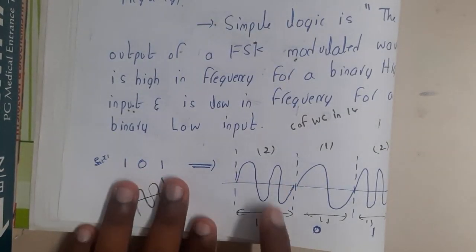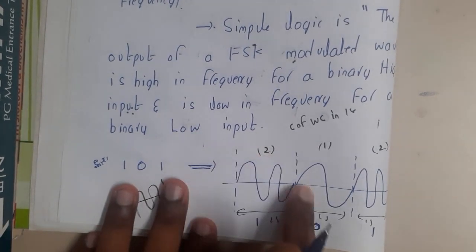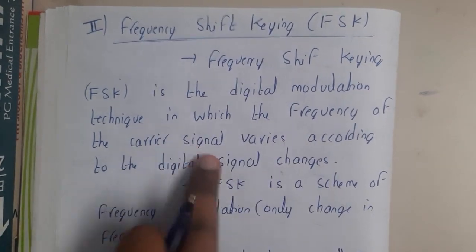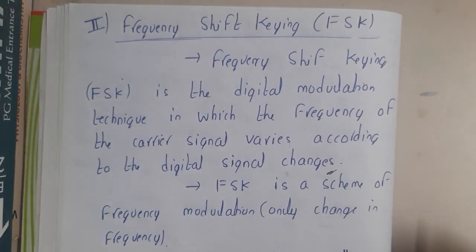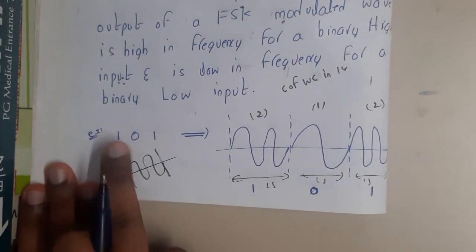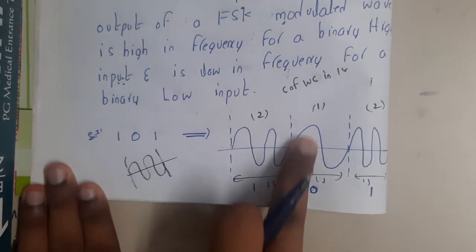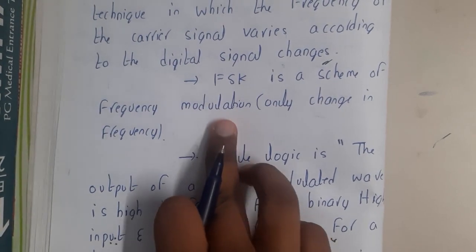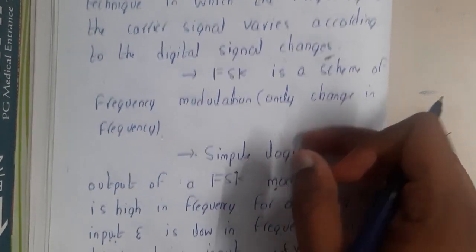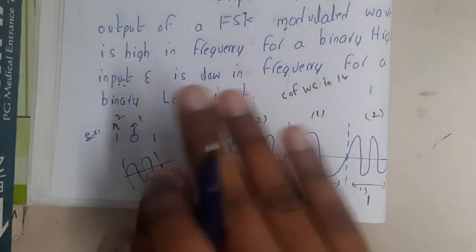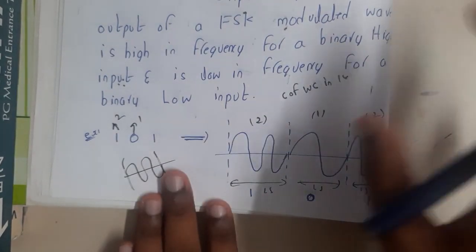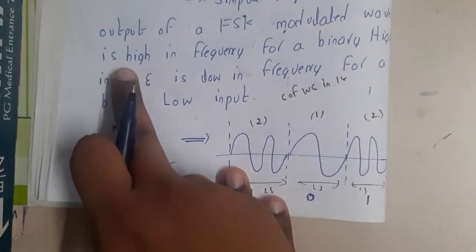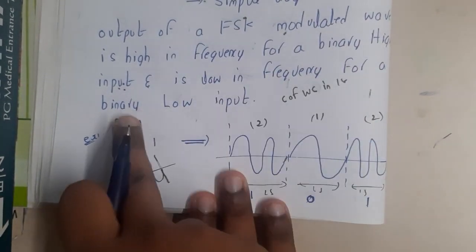With the help of the frequency concept — if the count of frequency is maximum it is a high value (one), if it is low it is a low value (zero). Frequency Shift Keying is the digital modulation technique in which the frequency of a carrier signal varies according to the digital signal change. Whenever it is a one we give frequency two, whenever it is zero we give frequency one. Here only the frequency changes; both amplitude and phase are kept constant.